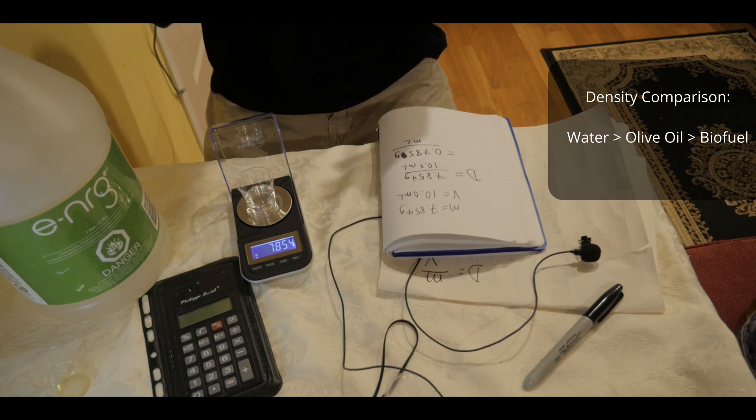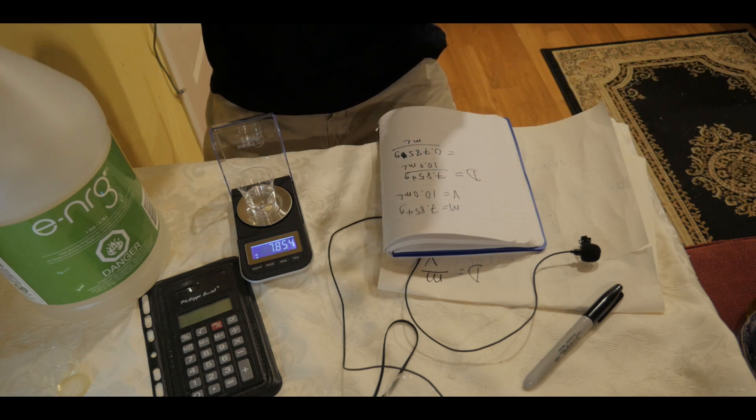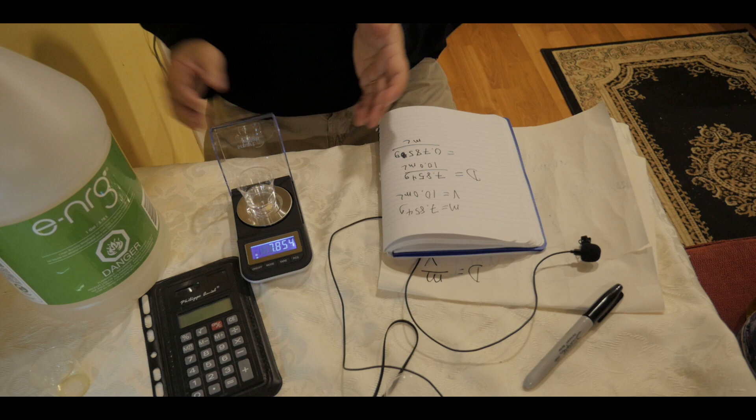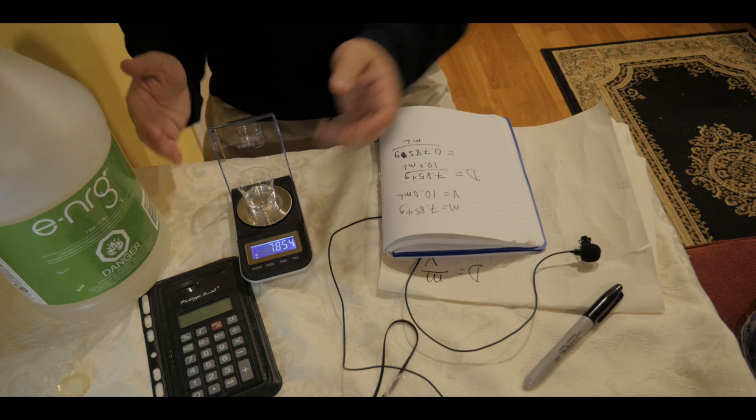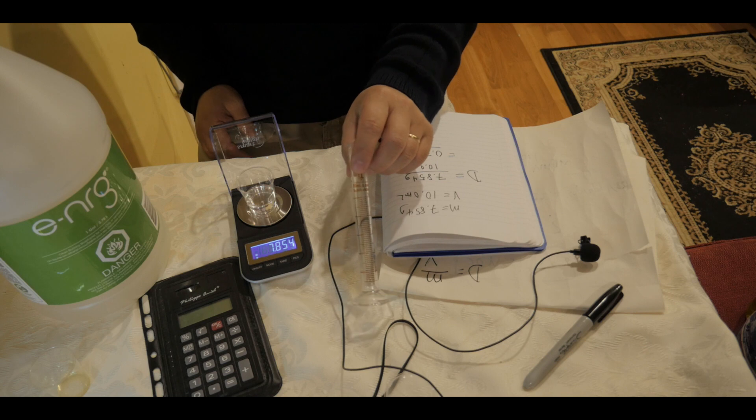Alright, cool. Now we know that they have different densities and hopefully you can use this and apply this to your class or if you're doing this yourself, hopefully you enjoy the experiment. Just make sure you have the proper equipment, precision electronic weight. I think it's better to get a volumetric pipette than the graduated cylinder because this one is not as accurate as I want.